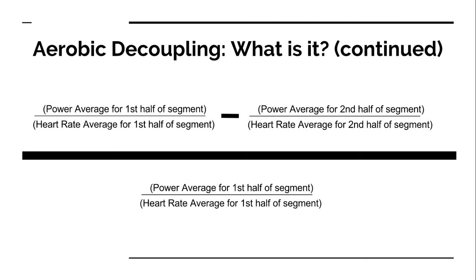If you want to check out the formula — which can be calculated with WKO, TrainingPeaks, or any of the software out there — it's helpful to get familiar with how this is calculated. For an hour-long test, you take your power average for the first 30 minutes divided by your heart rate average for the first 30 minutes, subtract the same ratio for the second 30 minutes, and divide that result by the first 30-minute ratio. This gives you a percentage, typically between zero and 20 percent.